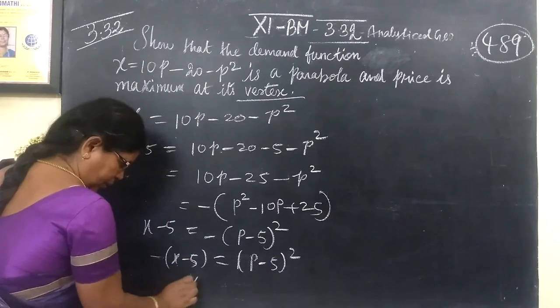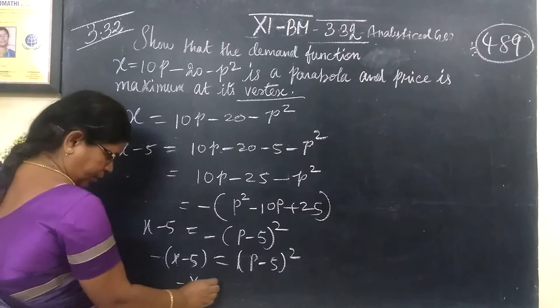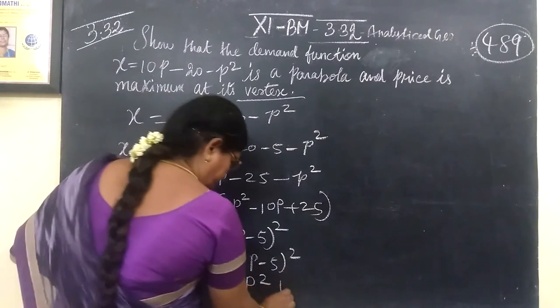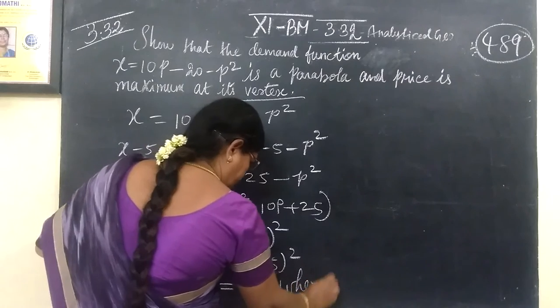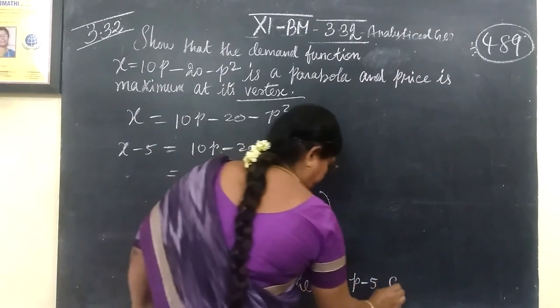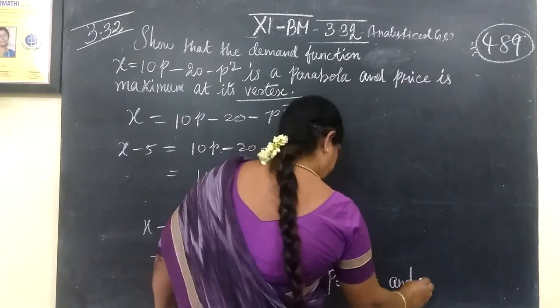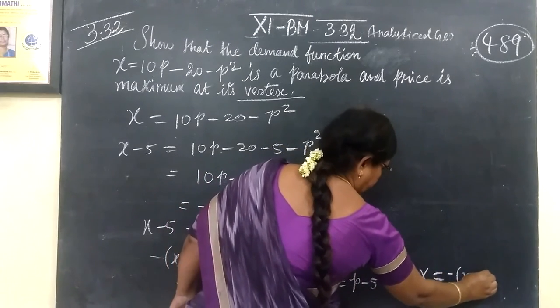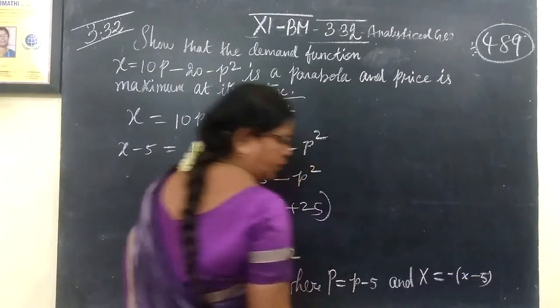This equals negative X equals P squared, where capital P equals small p minus 5, and capital X equals Z minus 5 the whole squared.